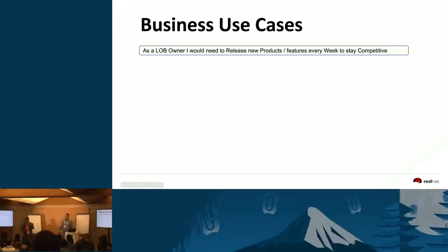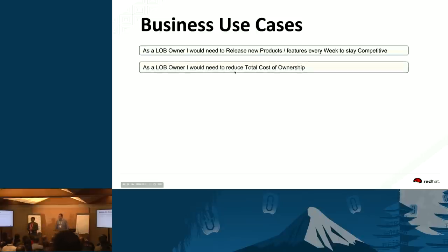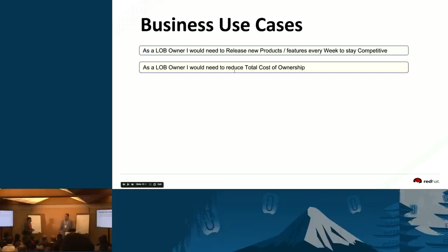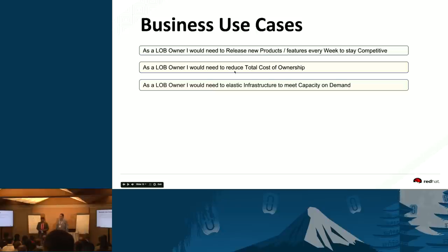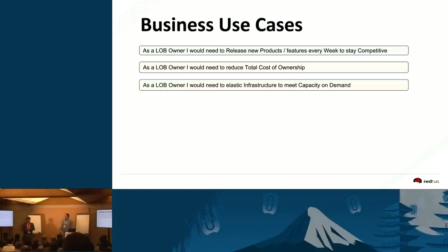Our mock customer business use cases: as a line-of-business owner, I want to build and roll out new products quickly because my competition releases monthly and I want to release weekly. I want to reduce total cost of ownership to increase margins. And I don't want the environment to fail during peak demand — I want scalable infrastructure that can meet capacity. A common use case for retail customers is seasonal load: at Christmas, the storefront goes heavy and you need to scale out to manage those workloads.